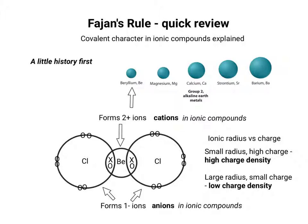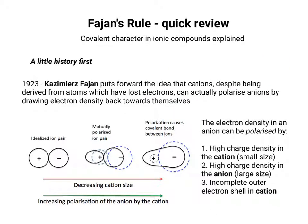Coming back to the original idea of Fajans' rules: the idea of polarisation can come from three scenarios, or a combination thereof. First, high charge density in the cation — small size but high charge. Second, high charge density in the anion — large size but high charge.